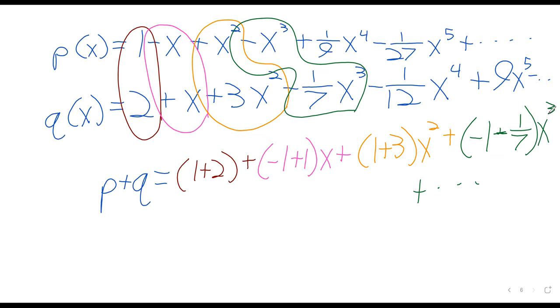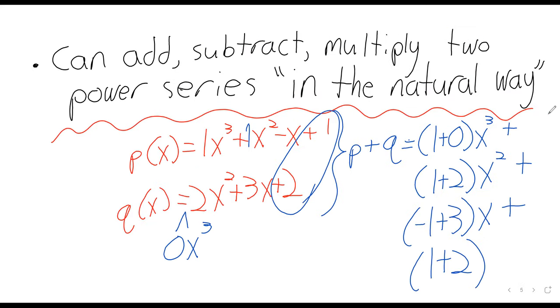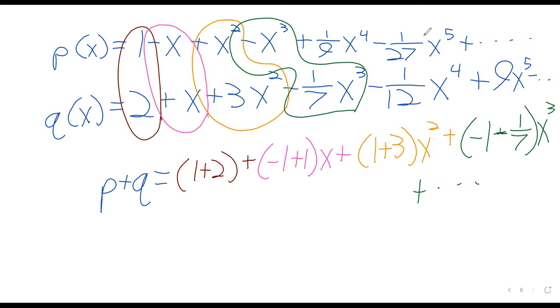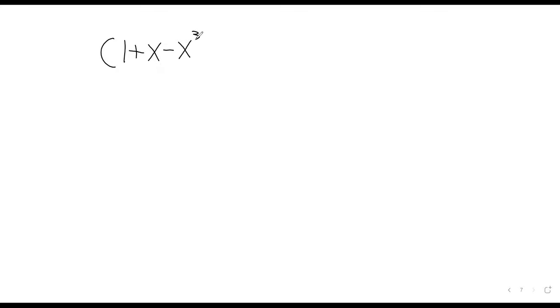Multiplication of power series is done in the natural way, though it's trickier in general. Multiplying polynomials is time consuming — if you have two degree-ten polynomials and want to multiply them, you'd better have plenty of scrap paper. Still, it works the same way in general, even if doing it is pretty inconvenient and difficult.